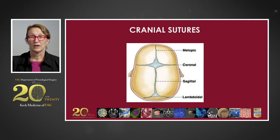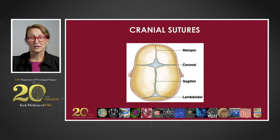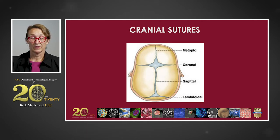The cranial sutures are well defined on the skull. The metopic suture runs between the two frontal bones and is the only cranial suture that you don't see in adults, but only see in children, particularly in infants. There are two coronal sutures, a sagittal suture running down the midline of the skull, and paired lamdoidal sutures in the posterior portion of the skull.